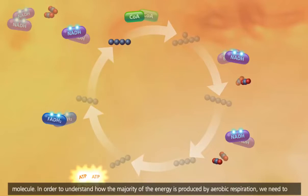In order to understand how the majority of the energy is produced by aerobic respiration, we need to follow the NADH and FADH2 molecules to the next stage, the electron transport chain.